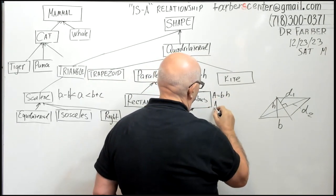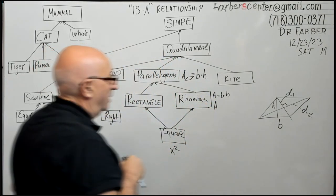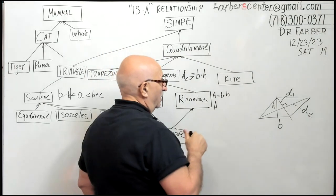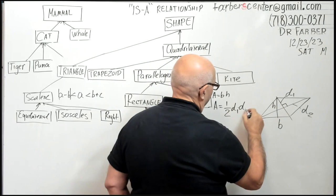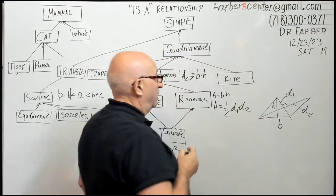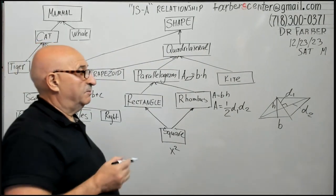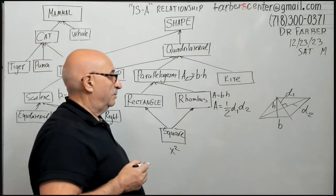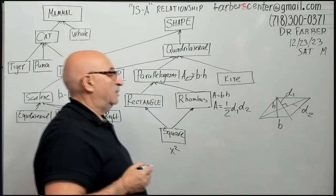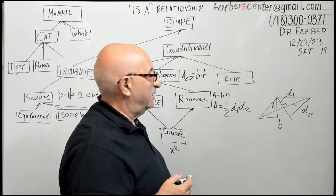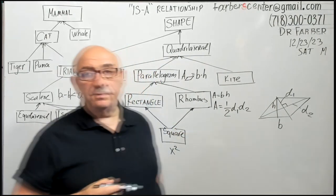It would be one over two, d1 times d2. In many cases in SAT, especially on digital version right now, time is very important. If they give you diagonals, instead of doing Pythagorean, find base, find height, you just plug in over there, one step, two seconds.